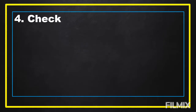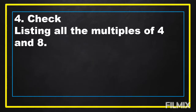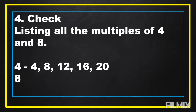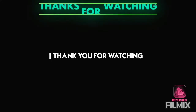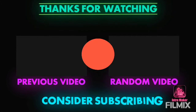The last step in solving a word problem is we're going to check. In our problem, we're going to list all the multiples of 4 and 8. The multiples of 4 are 4, 8, 12, 16, 20. The multiples of 8 are 8, 16, 24, 32, and 40. Then we're going to get the least common multiple. The least common multiple of 4 and 8 is equal to 8. So we got the correct answer. Thank you.